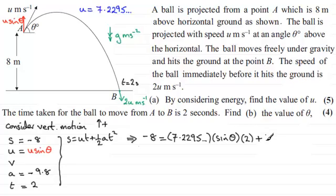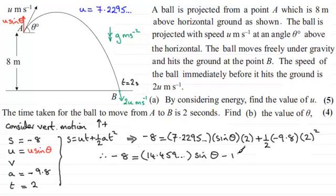Then it's plus a half times A times T squared. A is minus 9.8. So minus 9.8 there times T squared. 2 squared. So it's just a question of get on your calculator and work this out. Okay. So we've got minus 8 then equals, and if we do 2 times 7.2295, we end up with 14.459 and so on. Again, I'll put that in brackets because it's multiplied with sin theta. And then we've got a negative term here. And working this out gives minus 19.6 then.